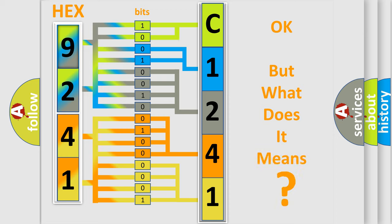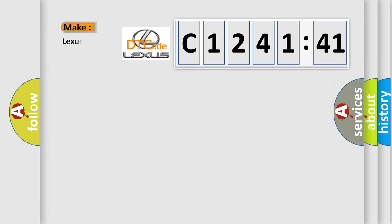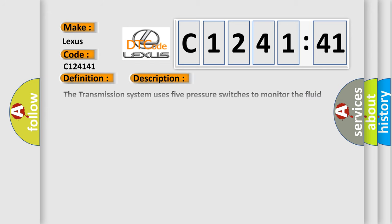The number itself does not make sense to us if we cannot assign information about what it actually expresses. So, what does the diagnostic trouble code C124141 interpret specifically for Lexus car manufacturers? The basic definition is pressure switch rationality.